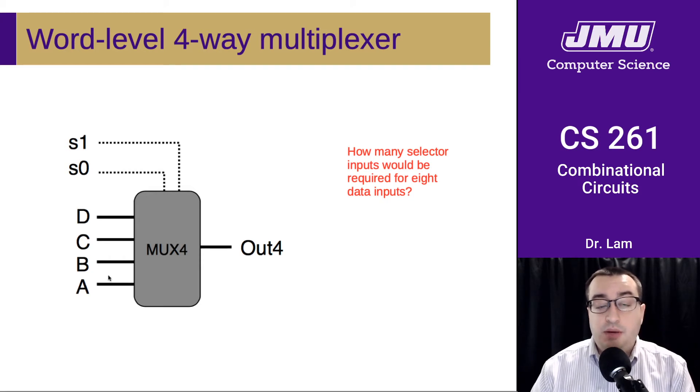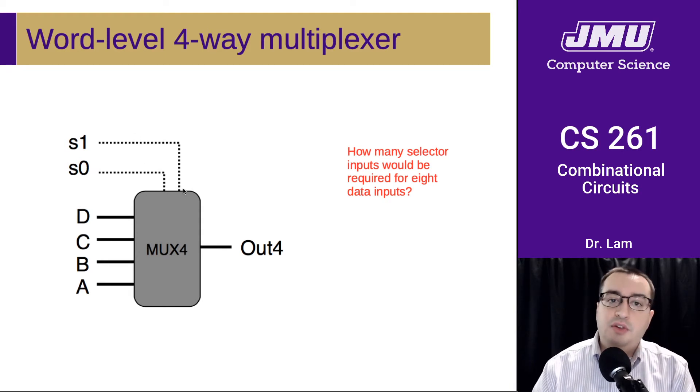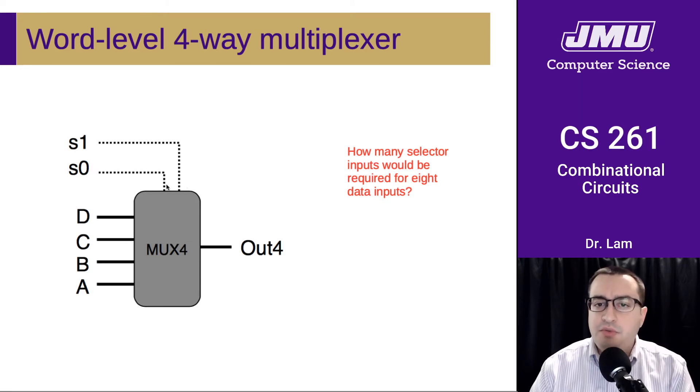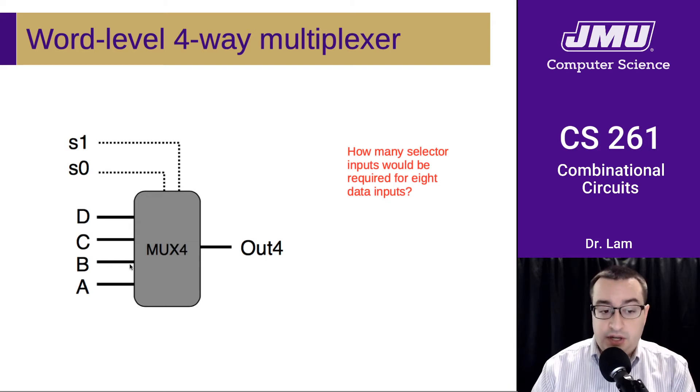Well, in order to double the number of inputs here, we added one new selector line. And so it shouldn't surprise you that to double it again to eight inputs, we simply need to add one more selector line. And it should hopefully be relatively intuitive why that is. Because if you think about these as bits in an integer ID for the input, the number of bits in the integer, adding another bit multiplies the number of values that we have. And specifically, we're doing this with bits, so the base is two. So the number of things that we can identify with an n-bit selector is two to the n.